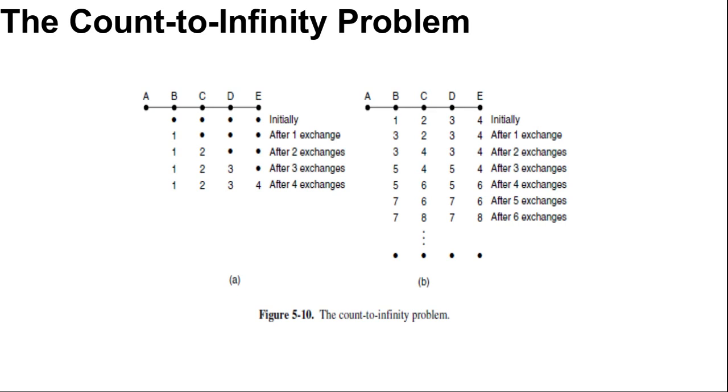At the time of the first exchange, B learns that its left hand neighbor has zero delay to A. And B now makes an entry in its routing table indicating that A is one hop away to the left. And all the other routers still think that A is down. At this point, the routing table entries for A are shown in the second row of figure B. On the next exchange, C learns that B has a path of length 1 to A. So it updates its routing table to indicate a path of length 2. But D and E do not hear the good news until later. Clearly, the good news is spreading at the rate of one hop per exchange. In a network whose longest path is of length N hops within N exchanges, everyone will know about newly revived link and routers.